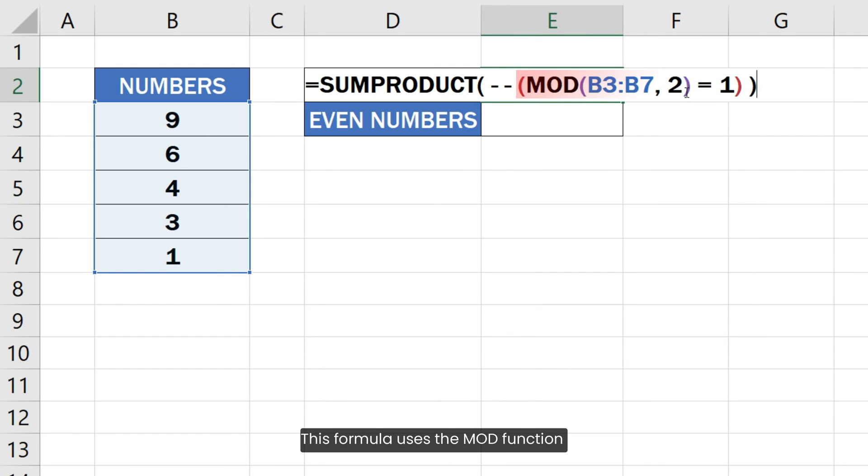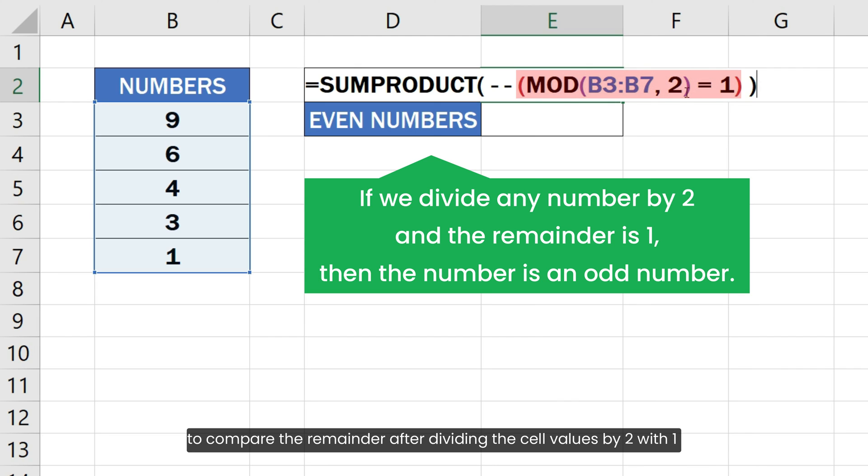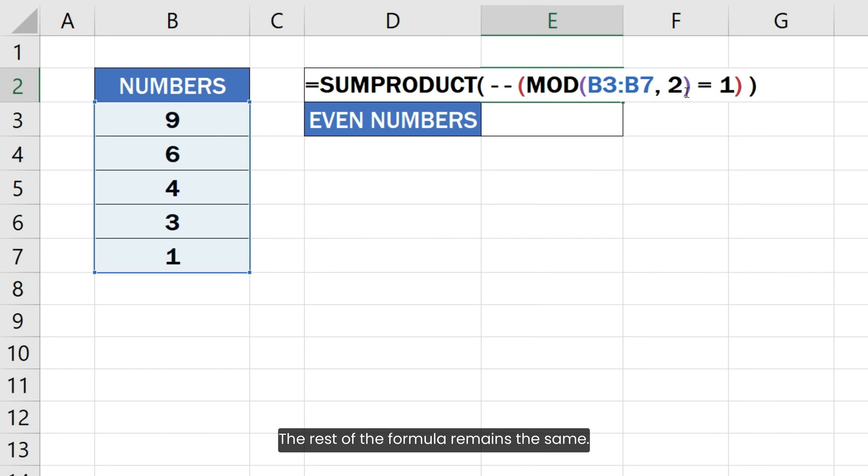This formula uses the MOD function to compare the remainder after dividing the cell values by 2 with 1 to check if the number is odd or not instead of using the ISODD function. The rest of the formula remains the same.